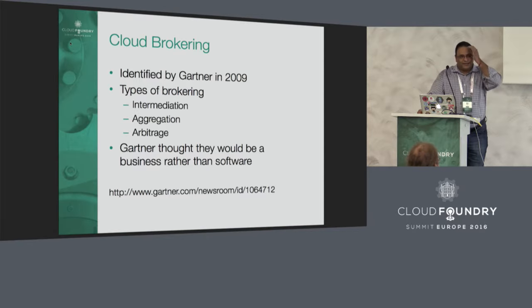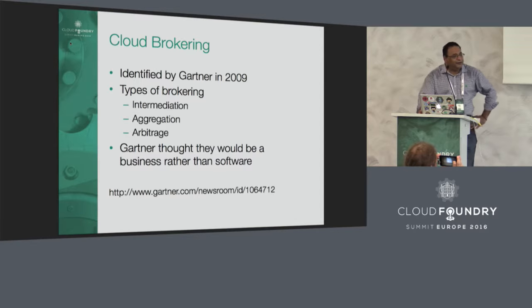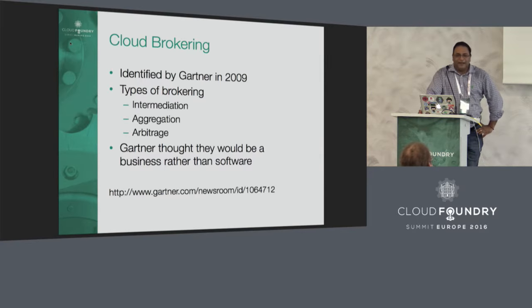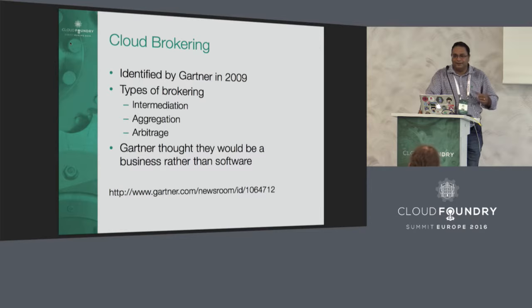I want to talk about cloud brokering, which is really the approach we're using. It was identified by Gartner in 2009, who identified different types: intermediation, where you provide the same service wrapped to your customer; aggregation, combining services; and arbitrage, where you take compute from one and find a cheaper cloud. Gartner thought this would be a business, but really we're building this cloud brokering capability in software these days.